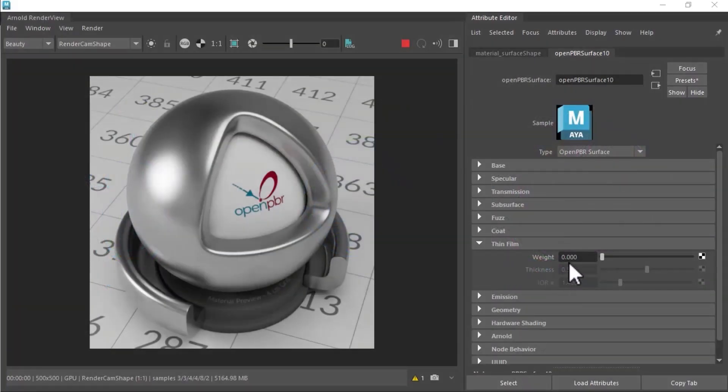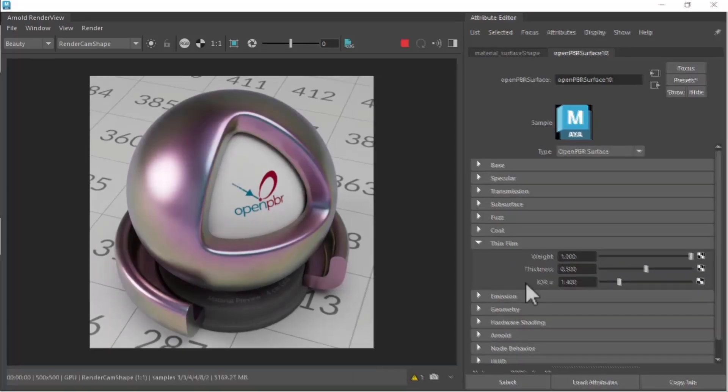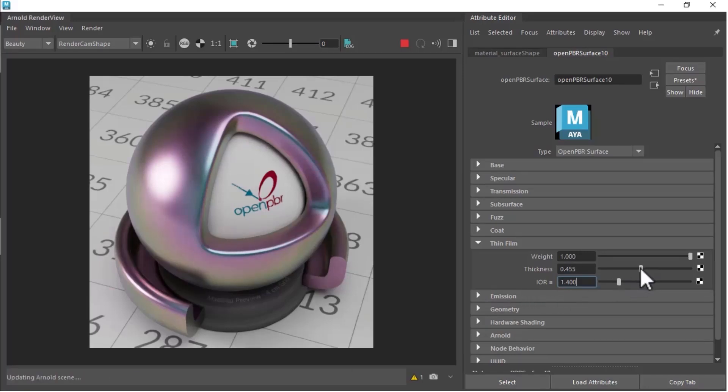The thin film weight controls the overall strength of the effect by modulating the presence of the film. The thickness and IOR of the thin film alter the spacing and rainbow colors of the fringes in a physically based manner. Note that the thickness is in micrometers, so the 0 to 1 range is usually about right for the physical effect. Making the thickness higher than one micrometer tends to reduce the colors, which is physically correct as the interference is washed away.